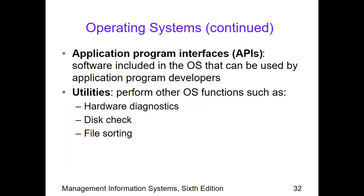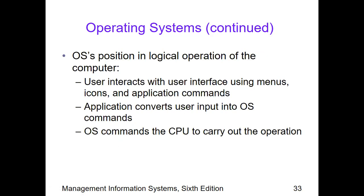We also have APIs — application program interfaces — which are software included in the OS that can be used by application program developers and can help with easy installation of application programs. Utilities perform other OS functions such as hardware diagnostics, disk check, and file sorting. In case of certain software problems, there are ways to troubleshoot — for example, disk check for memory and sorting of files, and hardware diagnostics for hardware issues. The OS position is basically logical — it sorts certain instructions and commands based on those instructions to be sent to peripheral equipment or devices.